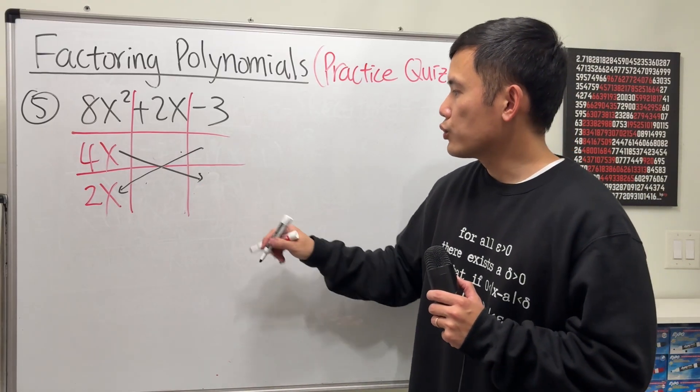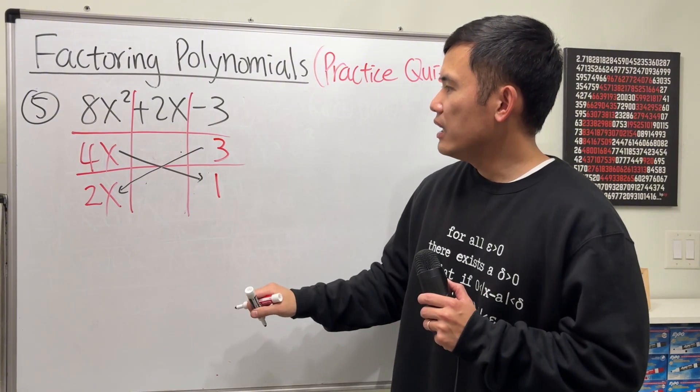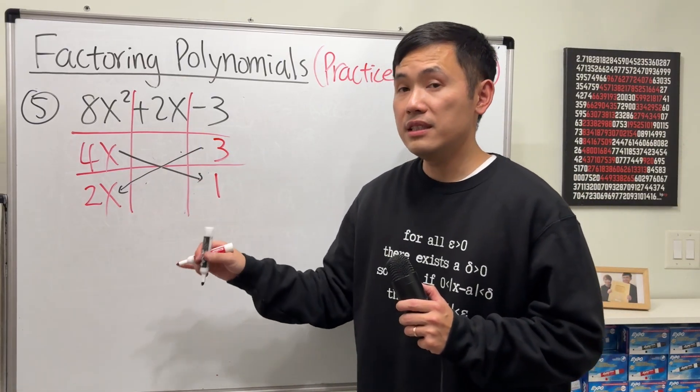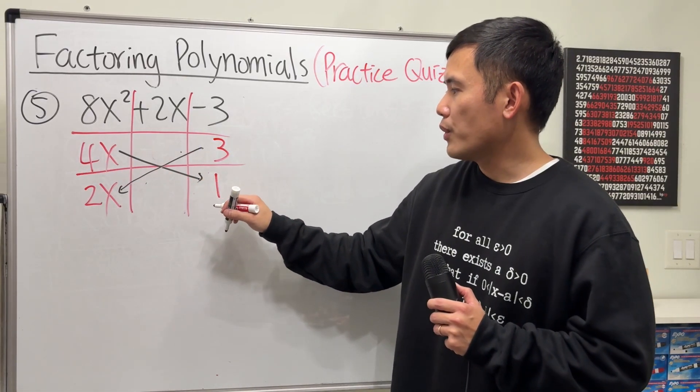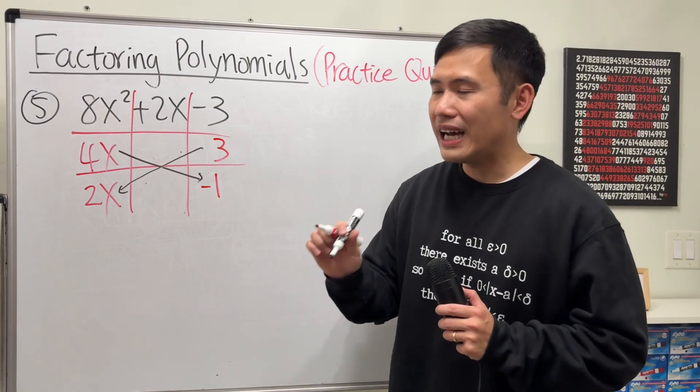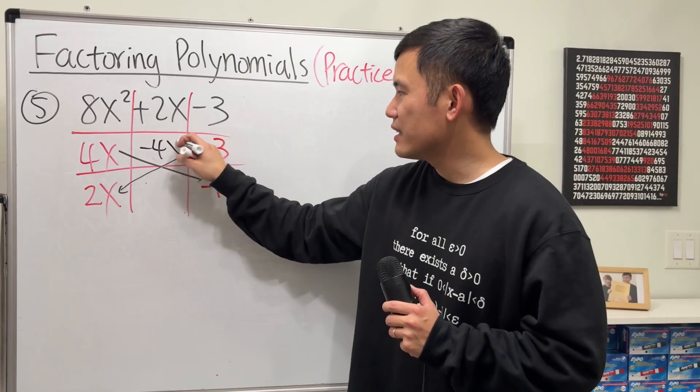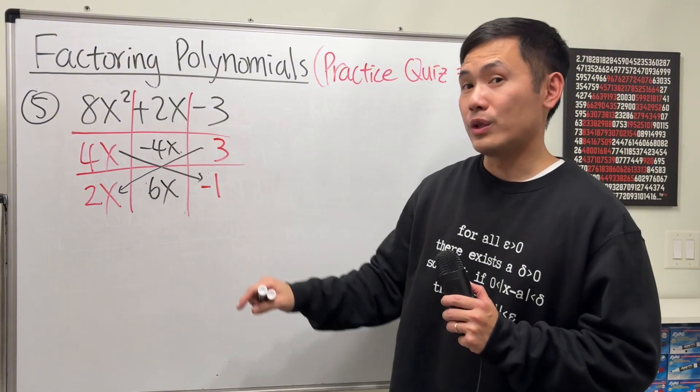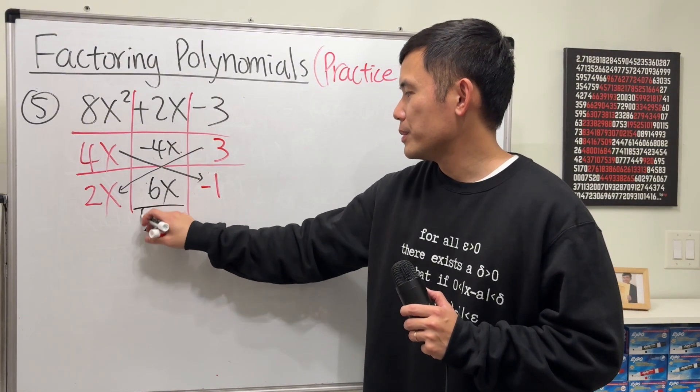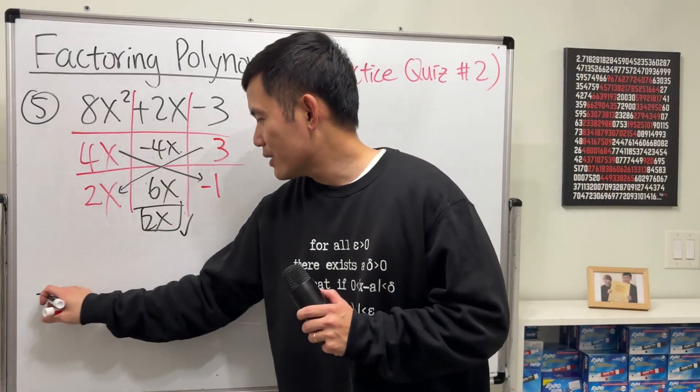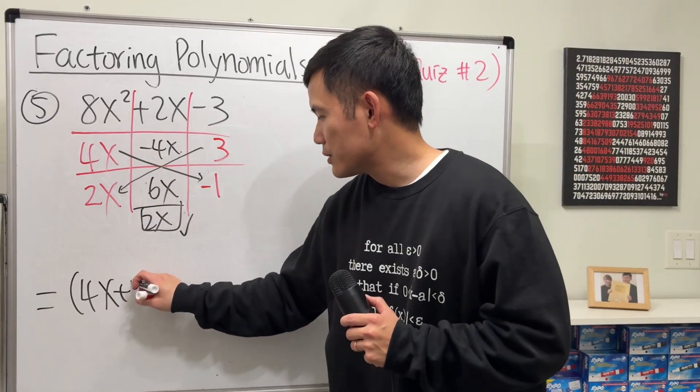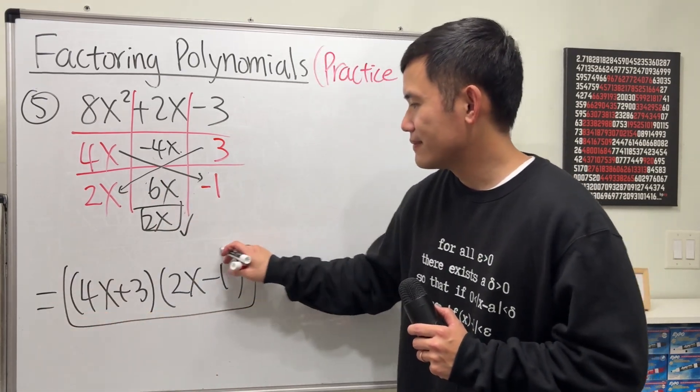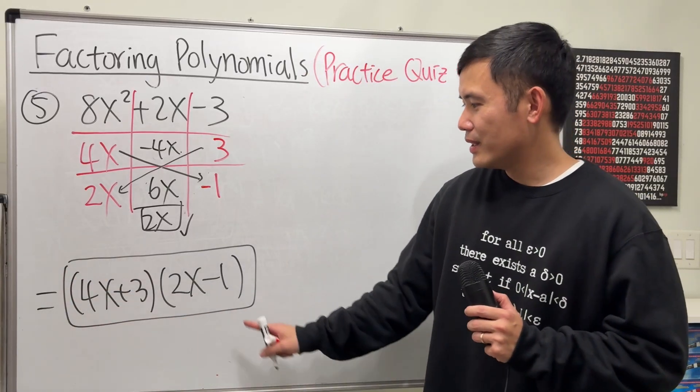So why don't we try 1 here and 3 here. And because I want to end up with a positive 2x in the middle, 3 times 2x is 6x, 4x times 1 is 4x. I want to make this negative so that we get a negative 4x here and that will give us positive 6x. When we combine them, we do end up with 2x. So we know, yeah, this right here is going to be correct. And we can write down the answer, which is, you go across: (4x + 3)(2x - 1). And then we are done. By the way, did you notice this? 1, 2, 3, 4.